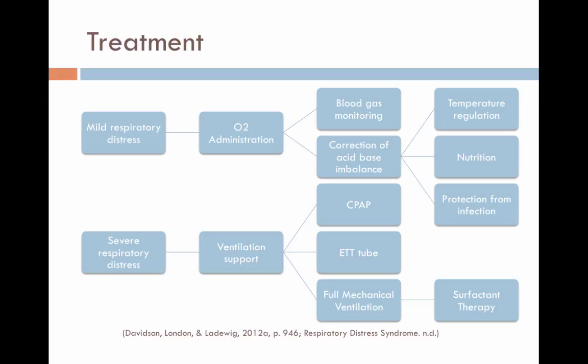Newborns with severe respiratory distress may require oxygen delivered by CPAP. They may need to be intubated with an ETT tube and may require mechanical ventilation to help them breathe. Surfactant therapy is given through the ETT tube immediately after birth as a preventive measure before symptoms develop, or as a treatment for infants with presenting symptoms. This treatment can be repeated several times until symptoms of respiratory distress syndrome resolve.